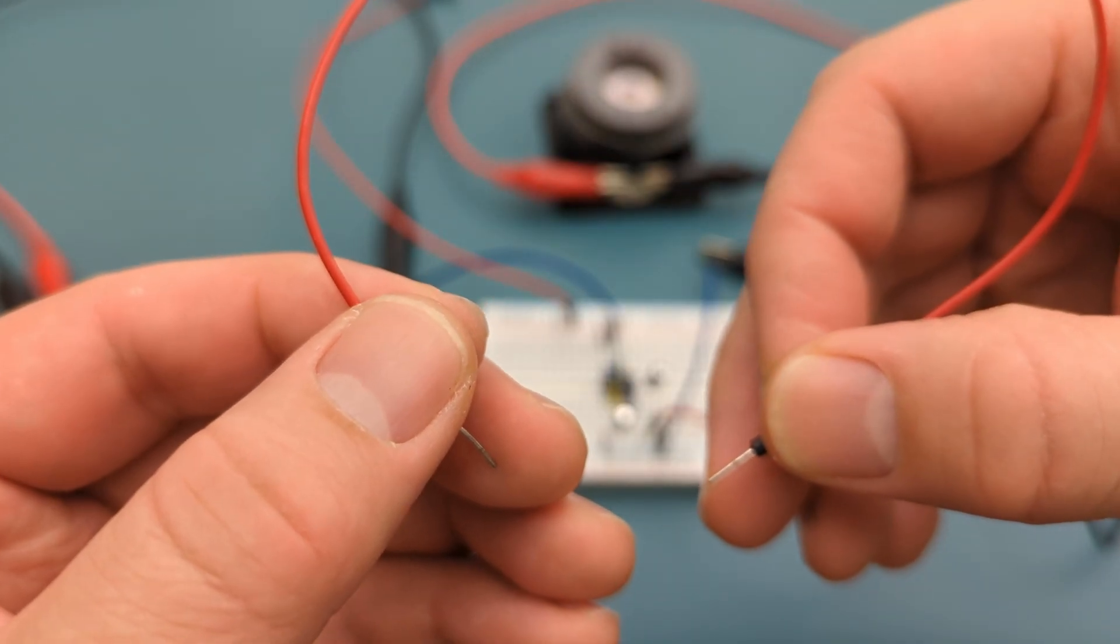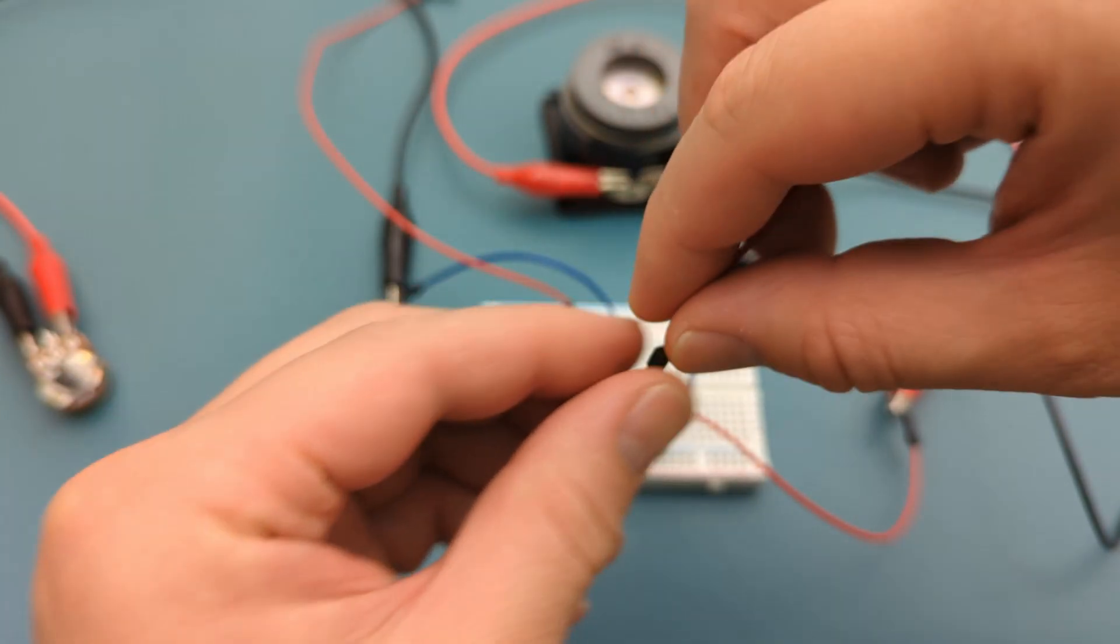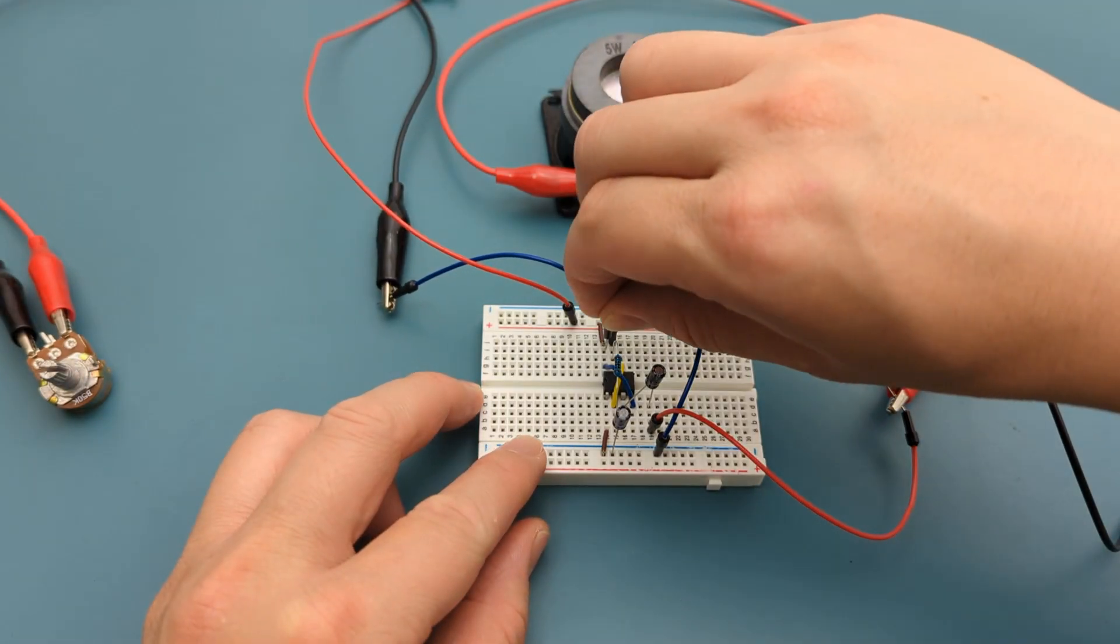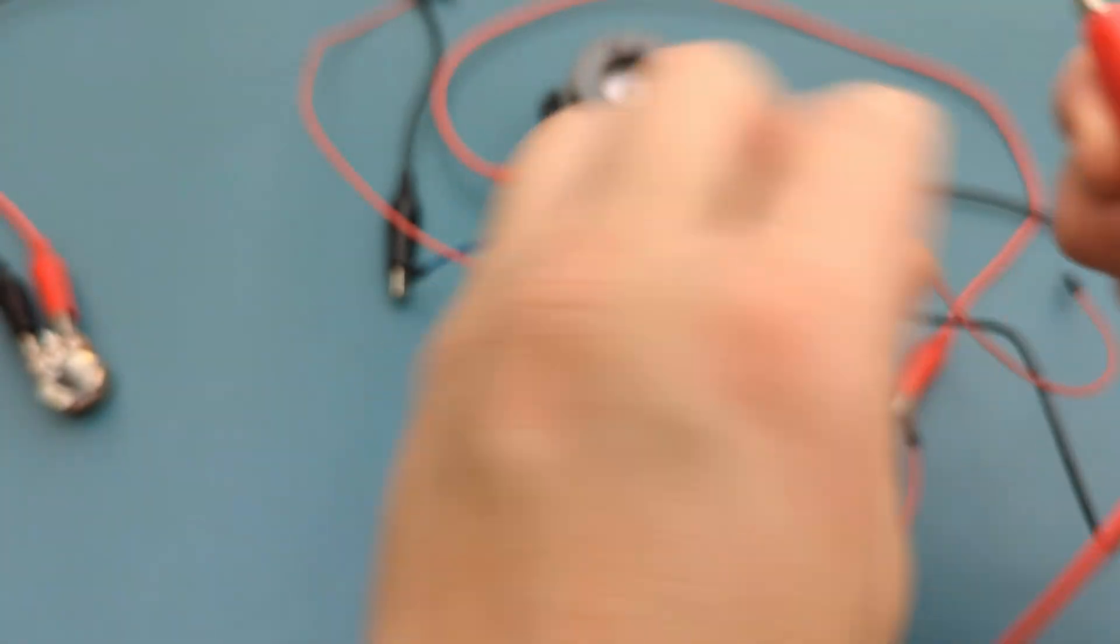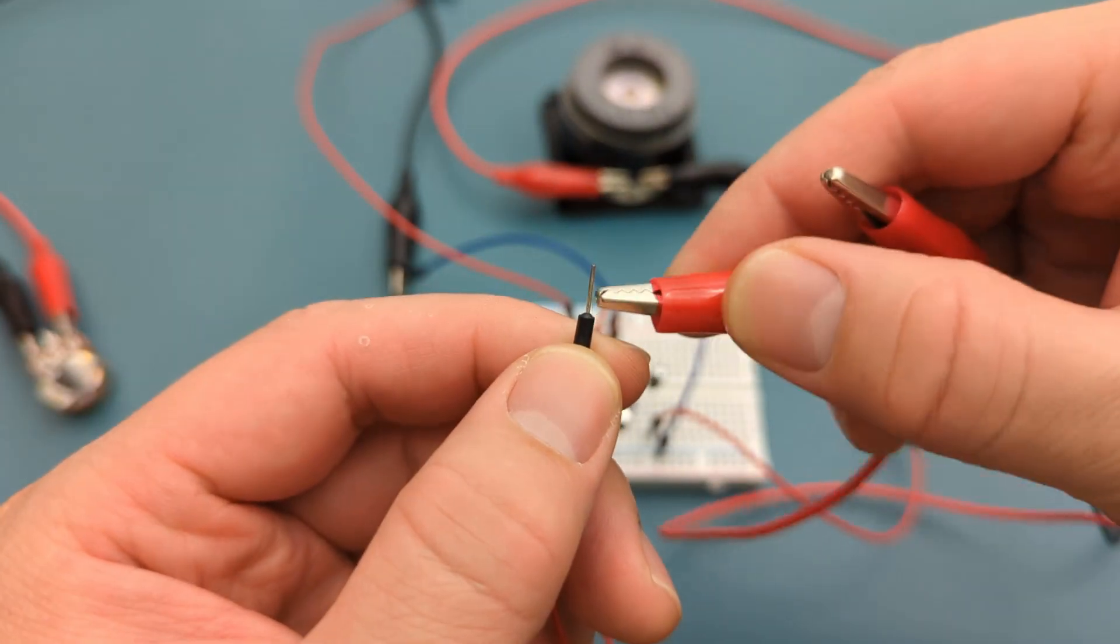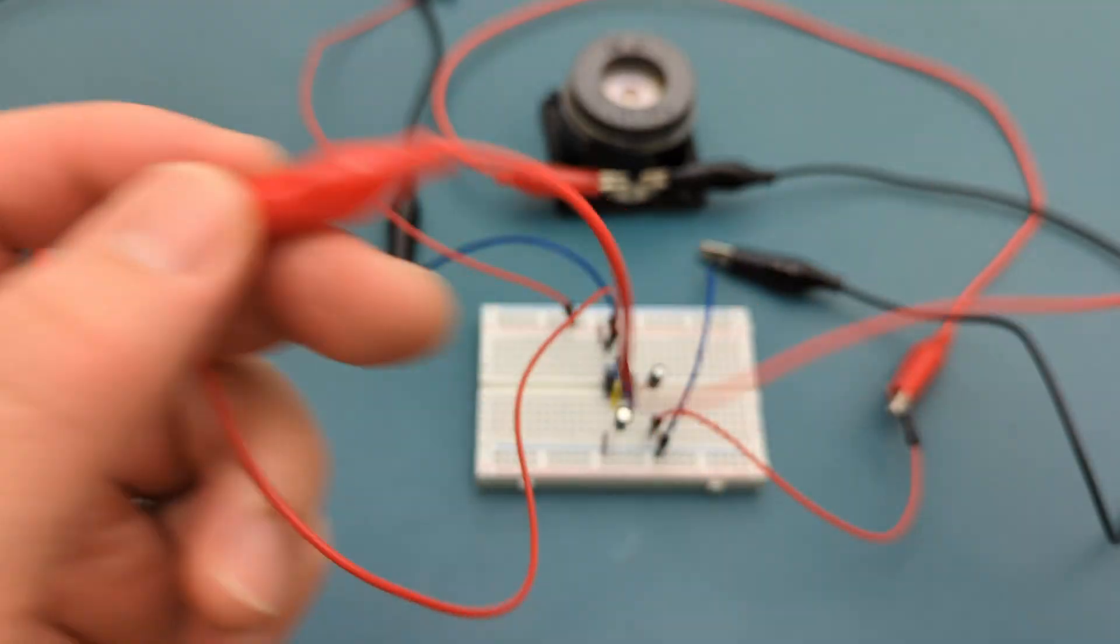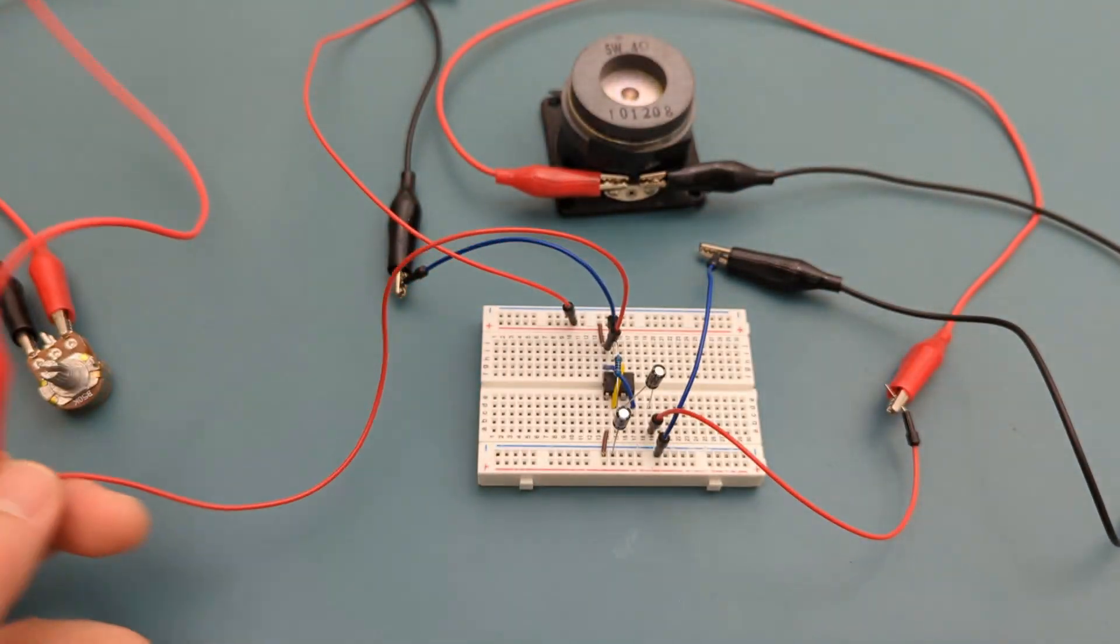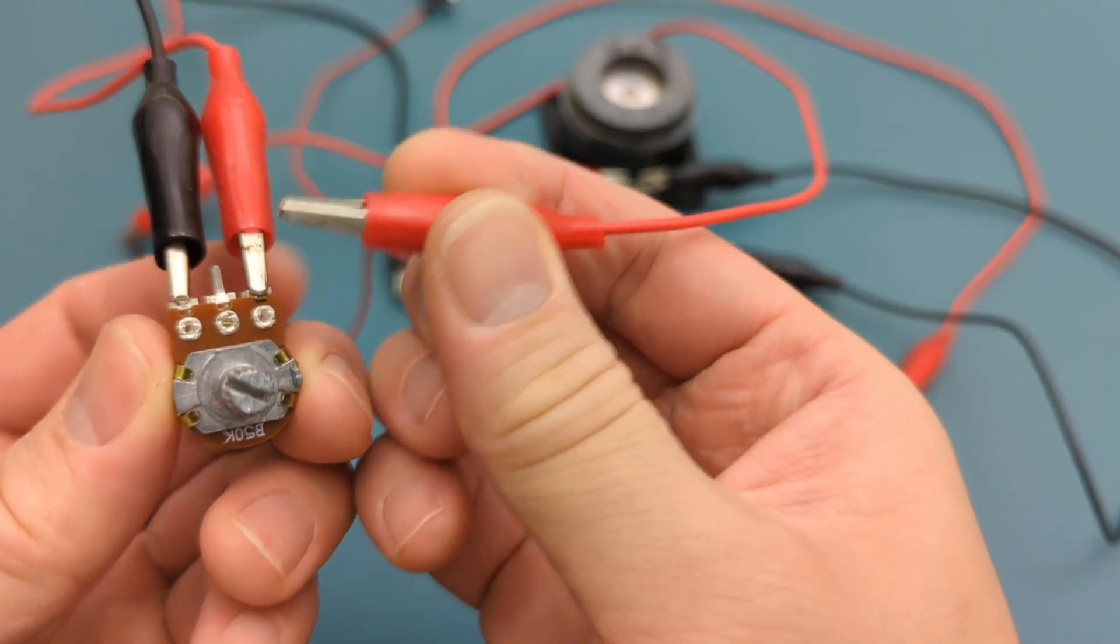Insert a jumper wire into pin 8 or VCC. Attach the alligator clip to the other end of the jumper wire. Attach the other end of the jumper wire to the middle terminal of the potentiometer.